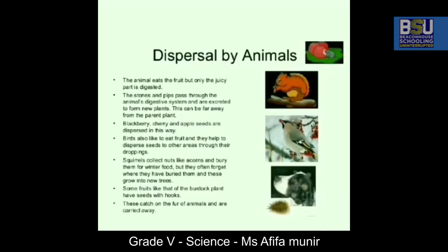This can happen far away from the parent plant. There are different types of fruits which animals like to eat — they consume just the juicy or fleshy part, leaving the seeds to be dispersed.